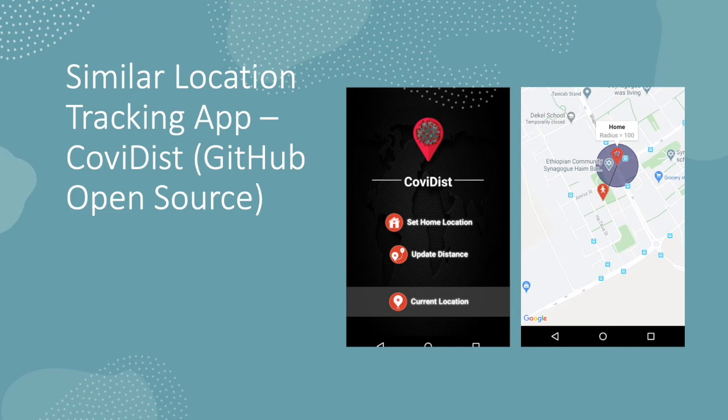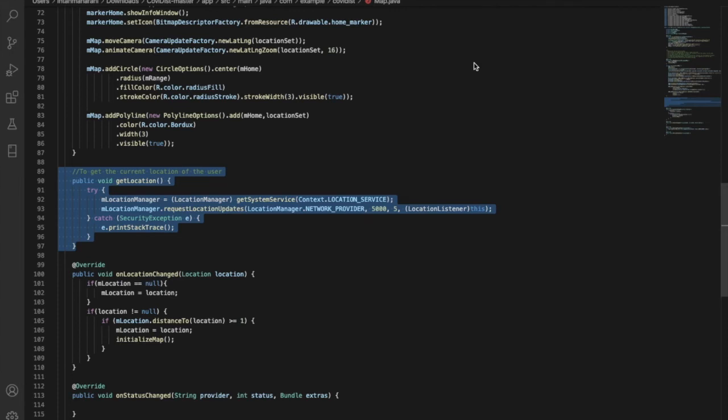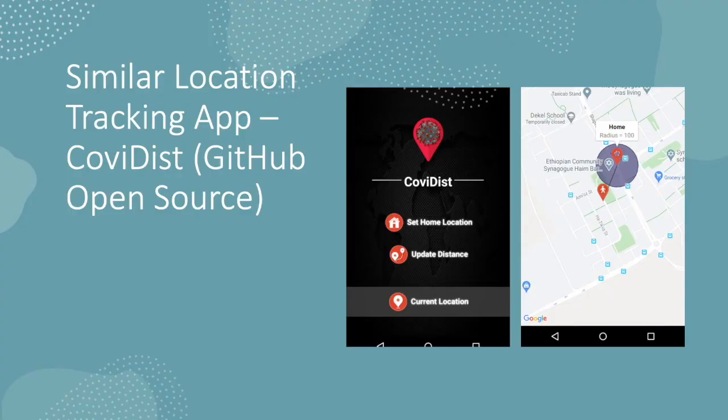From GitHub open source, this app which is called COVIDist is a similar application with Self-Quarantine Safety Protection app. This app allows the user to set their home location and to track the user's current location. If the current location of the user is outside of the predefined radius from the home location, an alert will be sent by the app. As you can see here, here is the source code of COVIDist app. To set the home location, the app will get the latitude and longitude of the entered address by the user. Next, this is the source code to get the current location of the user.